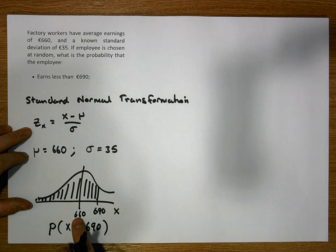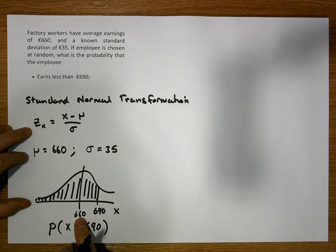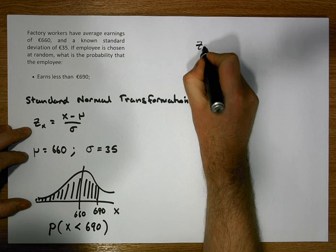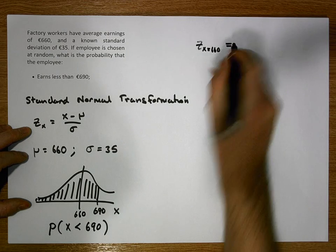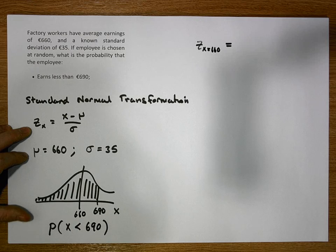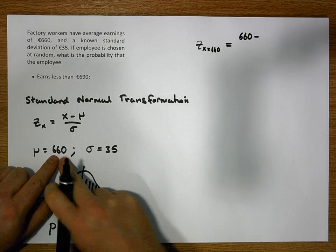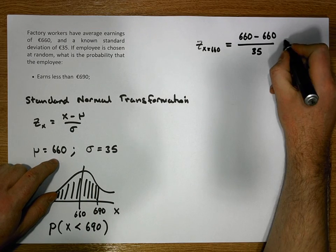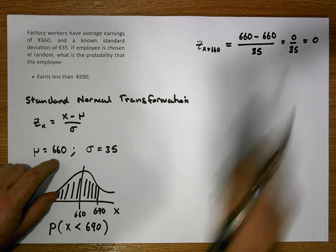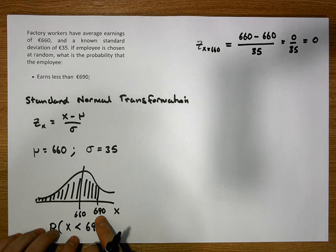We take each observation along the x-axis and substitute into the standard normal transformation. For the center point: when x = 660, z = (660 − 660) / 35 = 0/35 = 0. So 660 under the transformation maps to 0 — the center of the standard normal distribution.